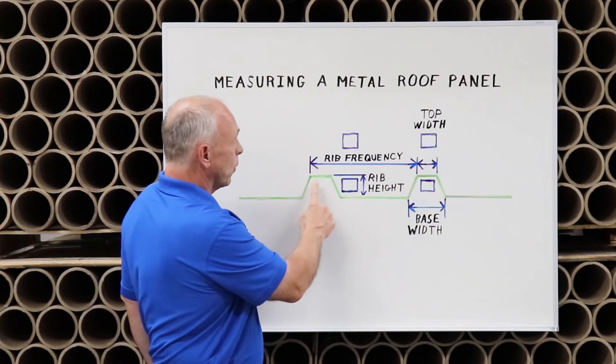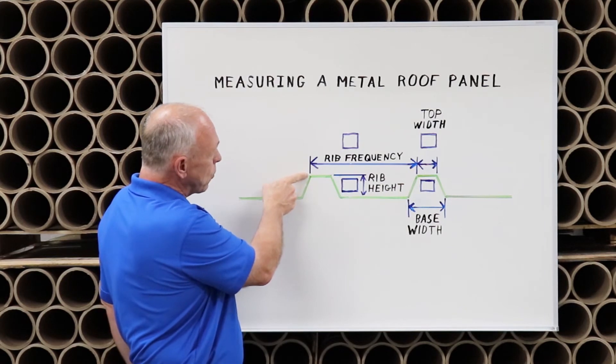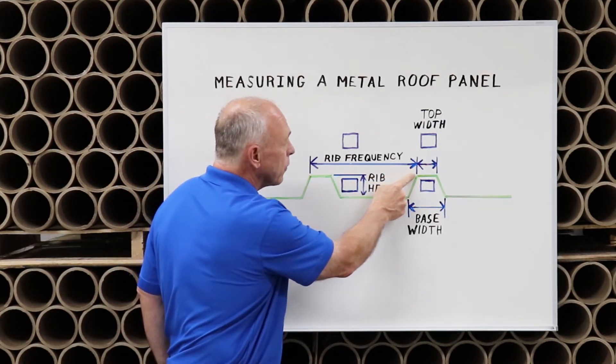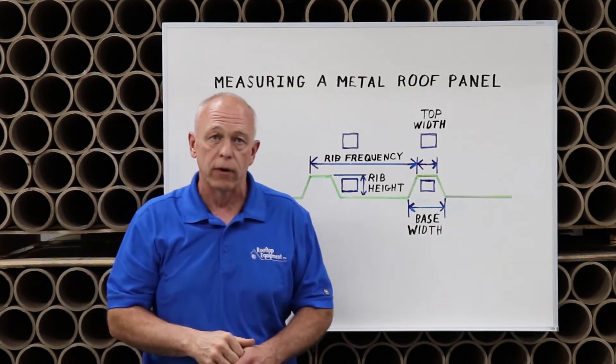And fourth is the rib frequency. From the top left corner of one rib to the top left corner of the other rib will give you the rib frequency.